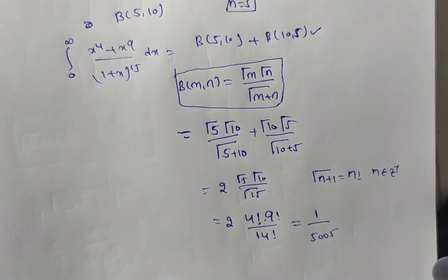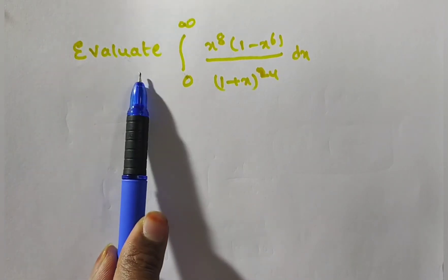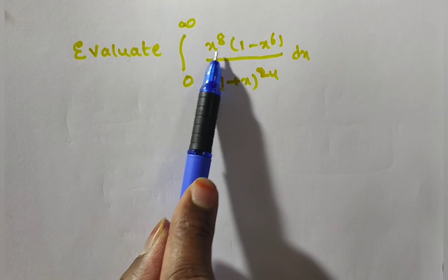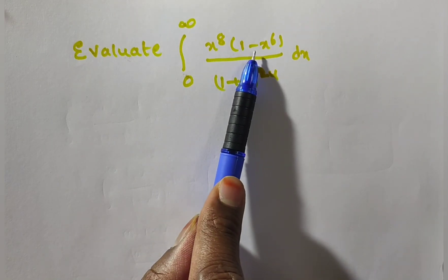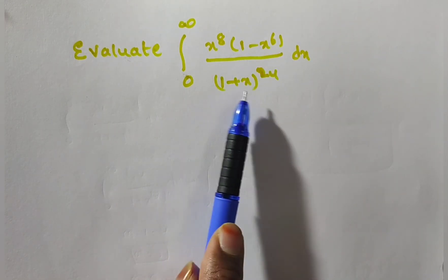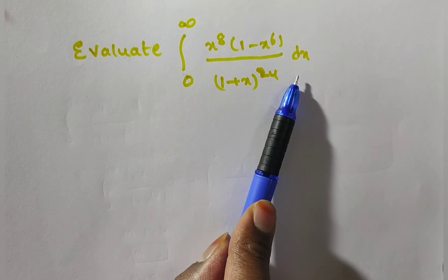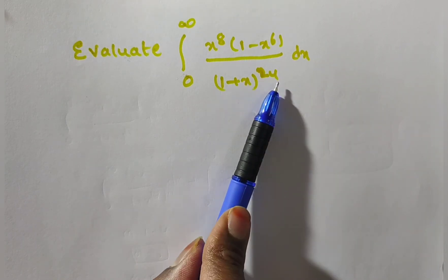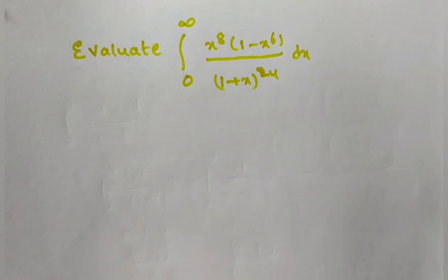So the final answer is 1/5005. Is that clear for everyone? Next, we will evaluate the integral from 0 to infinity of x⁸(1 - x⁶) / (1 + x)²⁴ dx — a similar problem, which we will discuss in the next video.